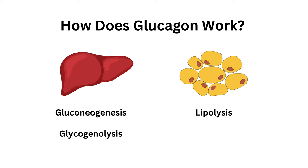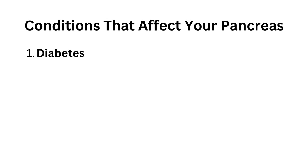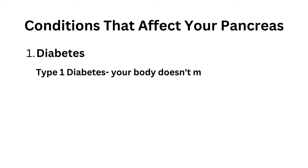Now let's move on to some common conditions that affect your pancreas. Diabetes occurs when your pancreas is not functioning properly or not doing what it's supposed to do. There are two types: type 1 diabetes and type 2 diabetes. In type 1 diabetes, your body doesn't make insulin due to autoimmune destruction of pancreatic beta cells, meaning your body's own immune system, which is supposed to fight off foreign matter like germs or bacteria, is now attacking your own body cells.